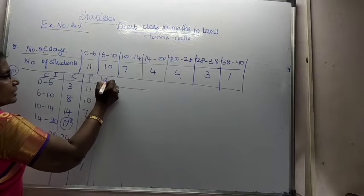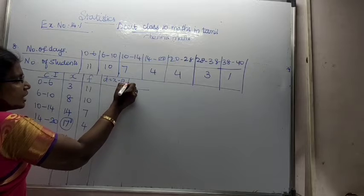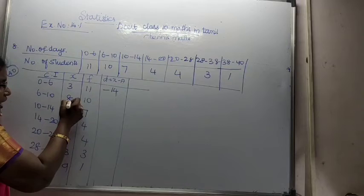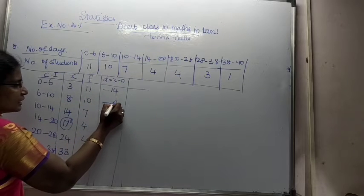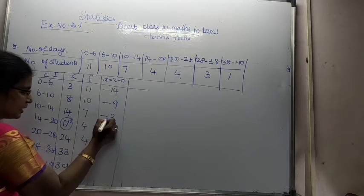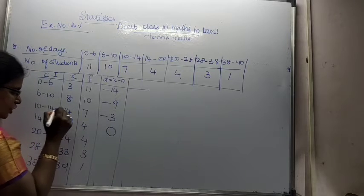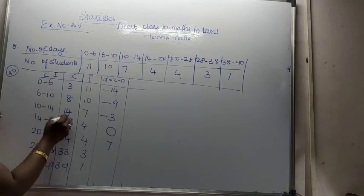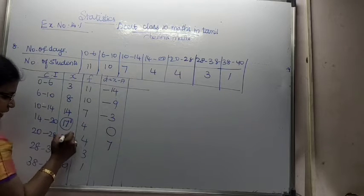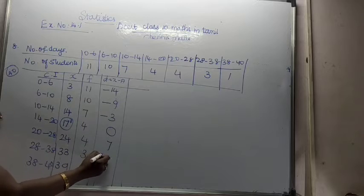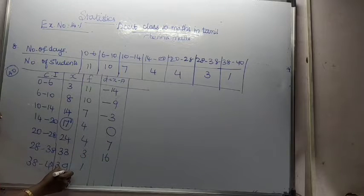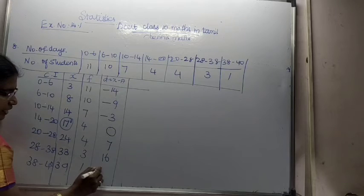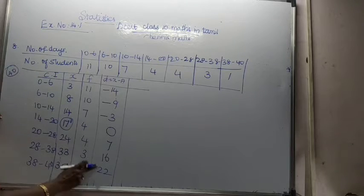D is equal to x minus A. I am going to write 3 minus 17, which is minus 14. 8 minus 17 is minus 9. 12 minus 17 is minus 5. 17 minus 17 is 0. 24 minus 17 is 7. 33 minus 17 is 16. 39 minus 17 is 22.